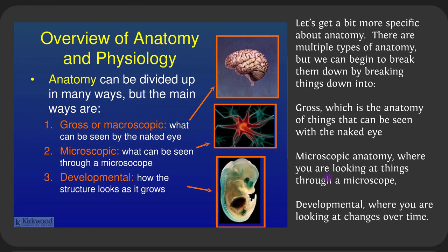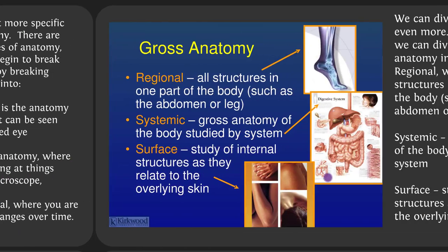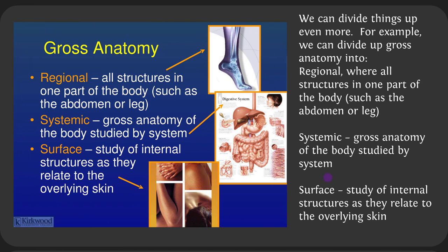Let's get more specific about anatomy. There are multiple types. We can begin by breaking them down into gross anatomy — structures seen with the naked eye — microscopic anatomy, where you look at things through a microscope, and developmental anatomy, where you look at changes over time. Gross anatomy can be divided into regional (all structures in one body part, such as the abdomen or leg), systemic (anatomy studied by organ system), and surface (internal structures as they relate to overlying skin).